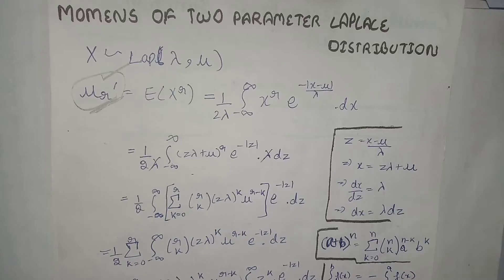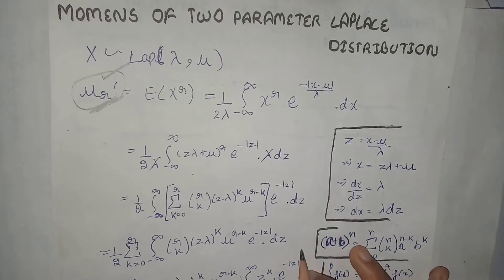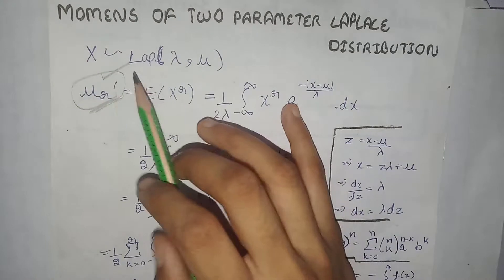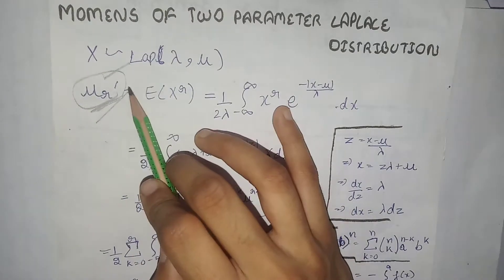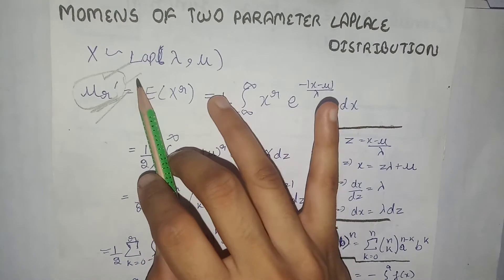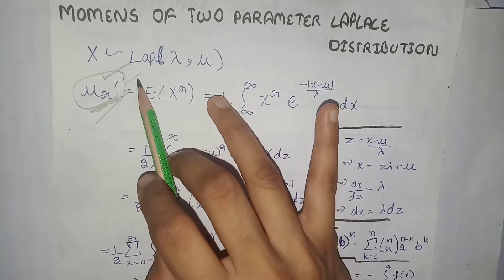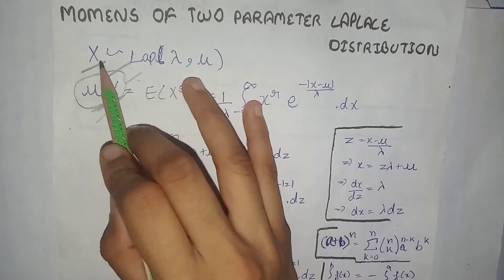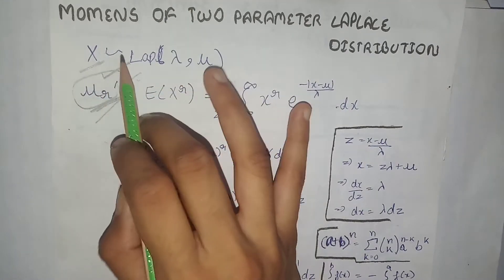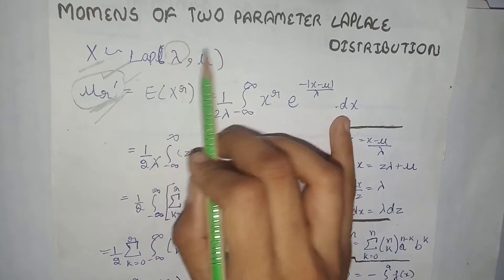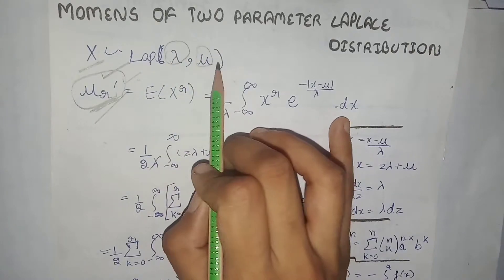We will calculate moments of the two-parameter Laplace distribution. Firstly, we will calculate the rth moment about origin, then from this relation we will calculate all the other moments about origin. Here, x is a random variable which belongs to the two-parameter Laplace distribution with these two parameters.